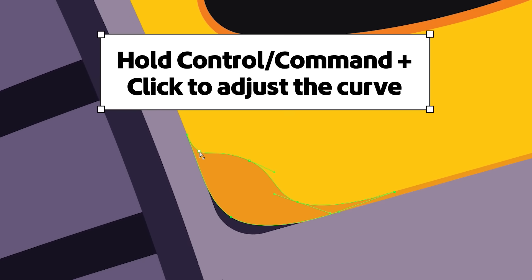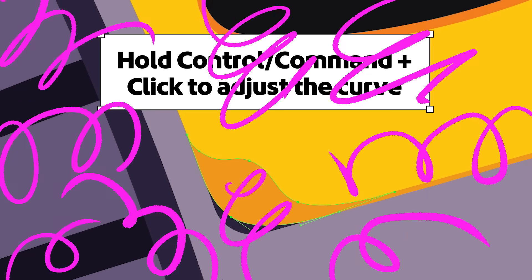Now let's talk curves. A lot of people get stuck here, but once you get the hang of controlling these handles, you'll fly through your designs. To adjust a curve after it's been drawn, hold command — or control if you're on PC — and click on the anchor point. This lets you modify the curve and its handle without actually breaking your shape.